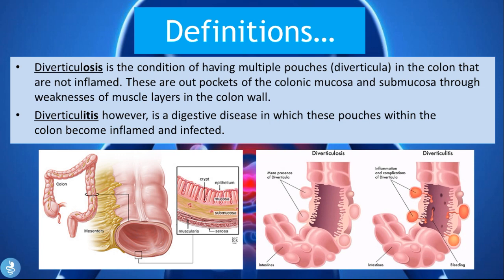Diverticulosis — from the definition, these are little pouches. You can see these little pouches here, and their wall is made up of only two layers: the mucosa and submucosal layers. These pouches push their way through weak areas of the muscular layer, and this pouch-like structure is called a diverticulum. Diverticulosis is simply the condition of having these pouches present, even if they are not inflamed.